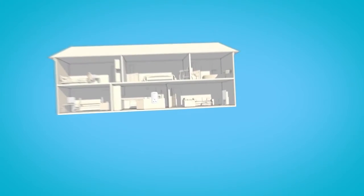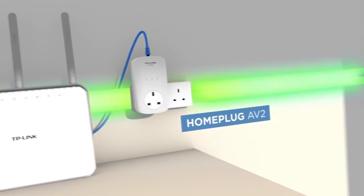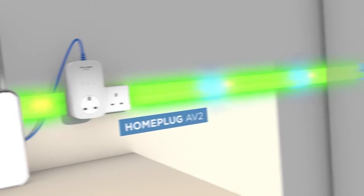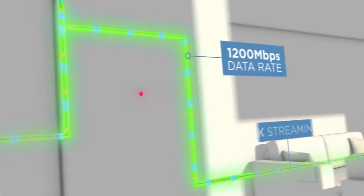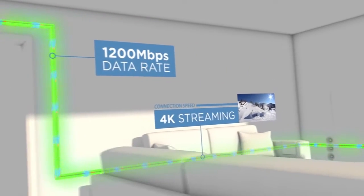Featuring the new generation of home connectivity, HomePlug AV2, it delivers data transfer speeds up to 1200 megabits per second for supreme networking performance.